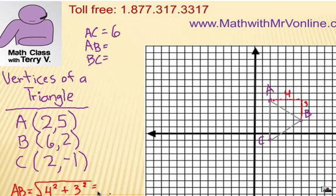So, in this case, 4 squared is 16, 3 squared is 9. The square root of 25, when we add those together, is of course 5. So, 5 units.